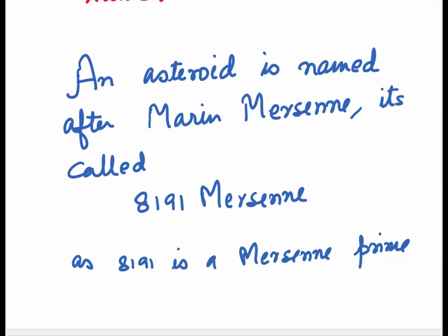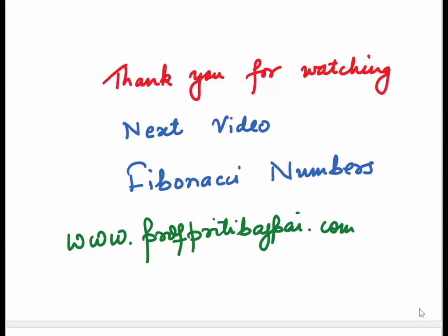An asteroid is named after Father Marin Mersenne. It's called 8191-Mersenne as 8191 is a Mersenne prime. Thank you for watching. Our next video will be on Fibonacci numbers. For detailed notes and practice problems, you can watch my website, www.profritikavashishta.com.